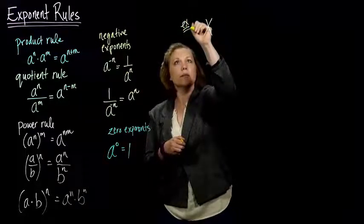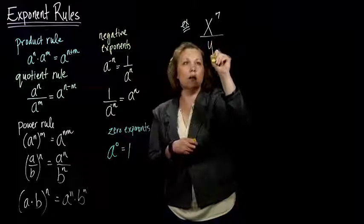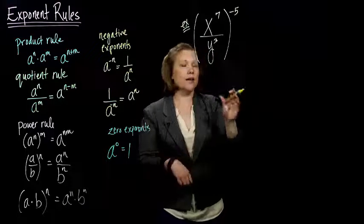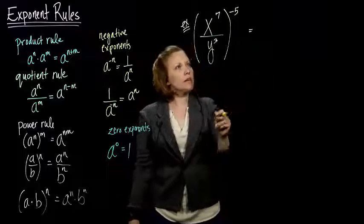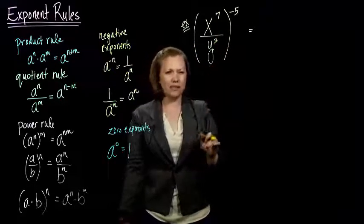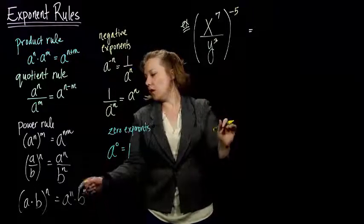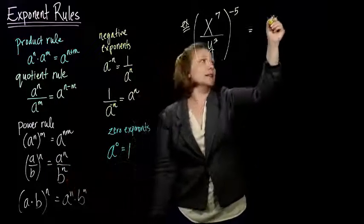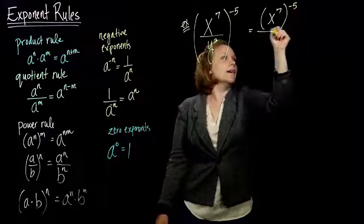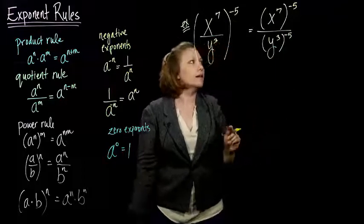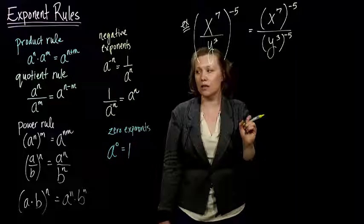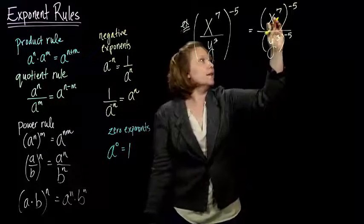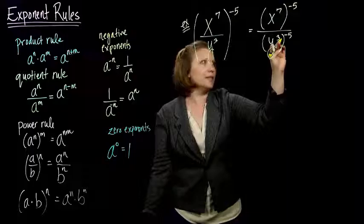A second example using these exponent rules together. If I've got x to the 7th over y to the 3rd, and then raise that to the negative 5 power. We're going to use all these rules combined together. I see I've got a quotient raised to a power. I see these parentheses and I'm thinking I probably need to get rid of those. Our product rule for fractions told us if I had a fraction raised to a power, I take the top and raise that to the power, and then take the bottom and raise it to that power. So I have x to the 7th to the negative 5 over y to the 3rd to the negative 5.